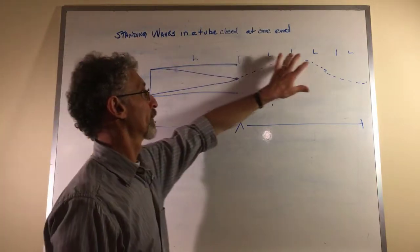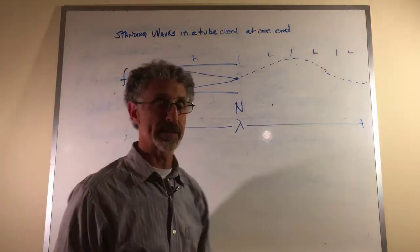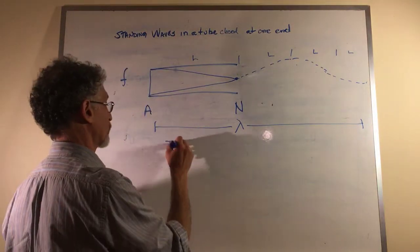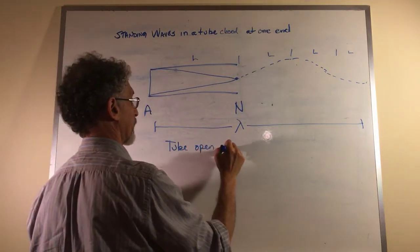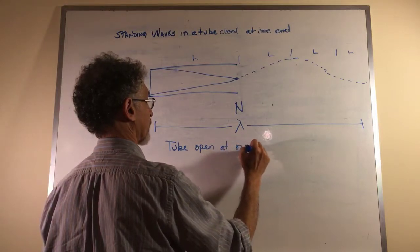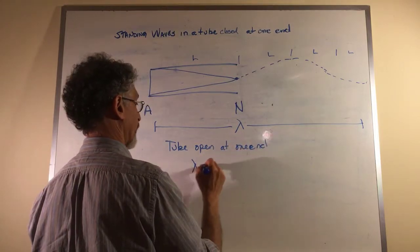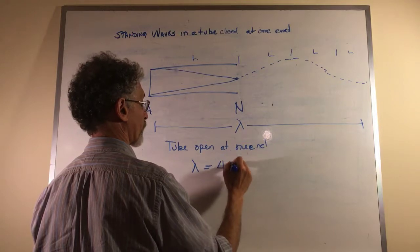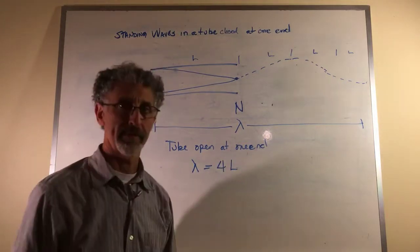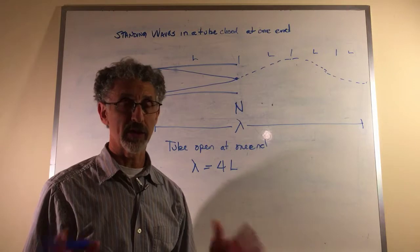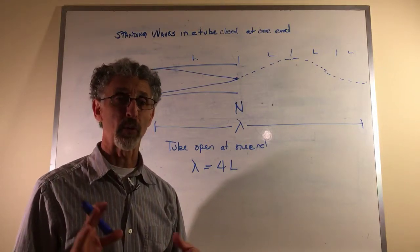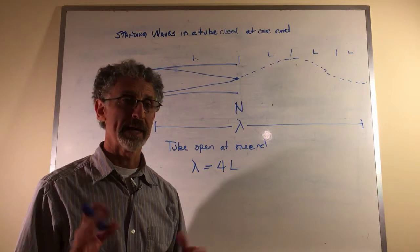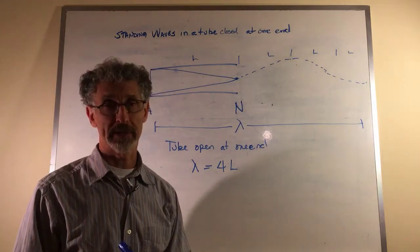This is the wavelength. It equals 1, 2, 3, 4 times the length. So for a tube open at one end, the wavelength equals 4 times the length. Open at both ends, closed at both ends, 2 times the length. Open at one end, it is 4 times the length.